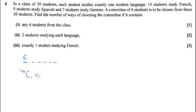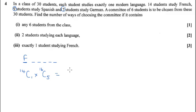So we're going to start off with 14C1. We then need to choose five more people out of the nine Spanish students and the seven German students — that's 16 students we're allowed to choose from. So 14C1, which is 14, times 16C5. And that comes out at 61,152.